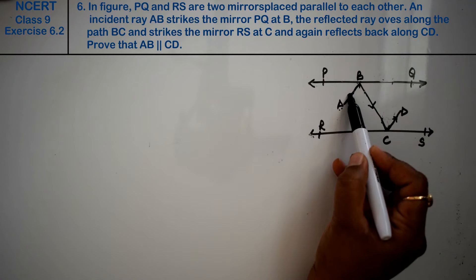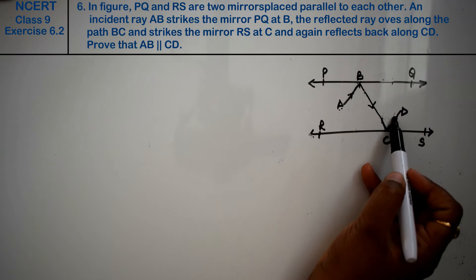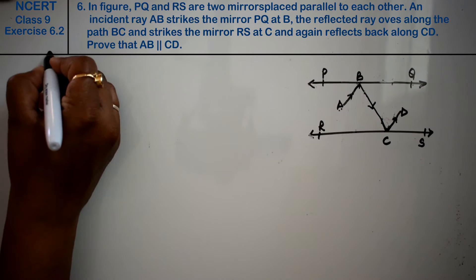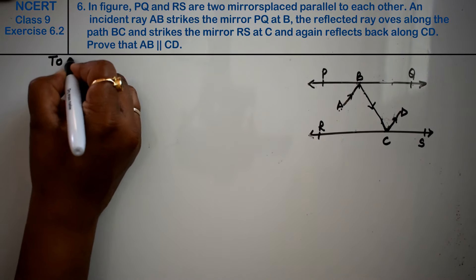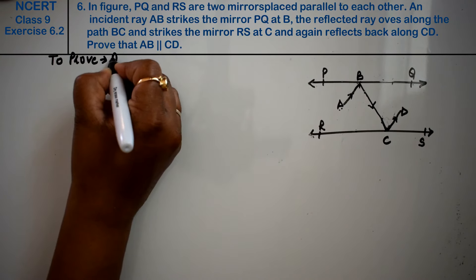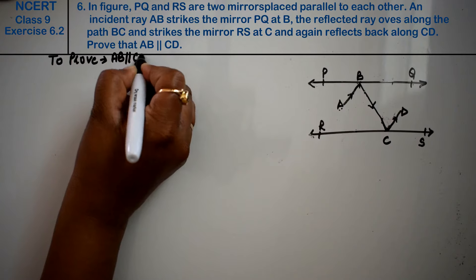Then prove that AB is parallel to CD. This AB is parallel to CD, we have to prove this. What do we write here? To prove: AB is parallel to CD.